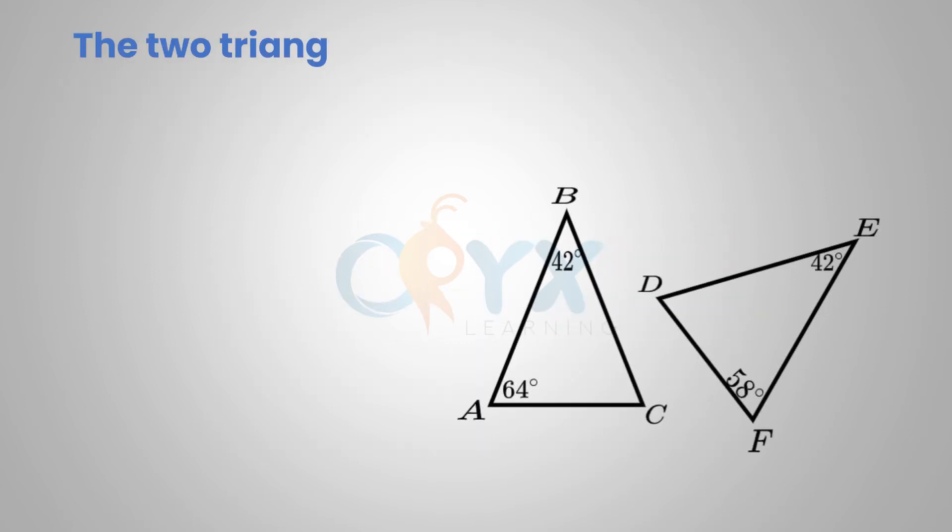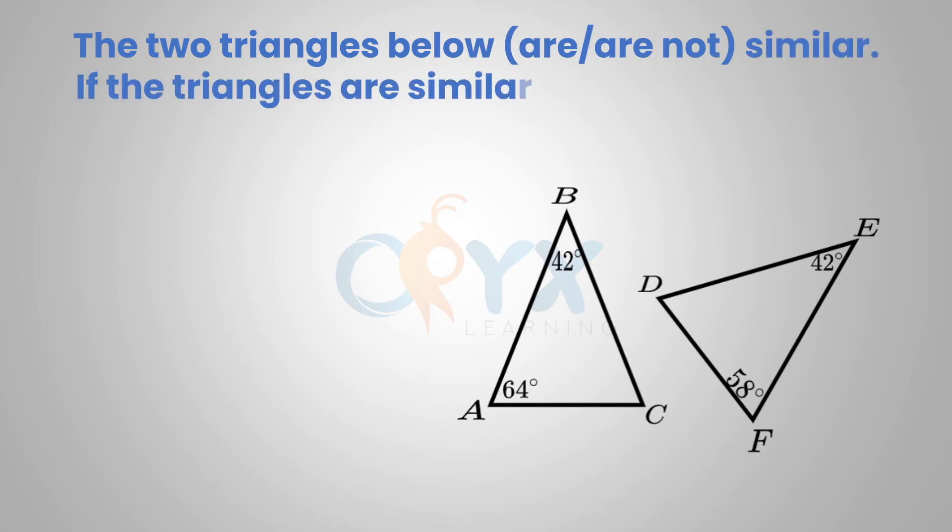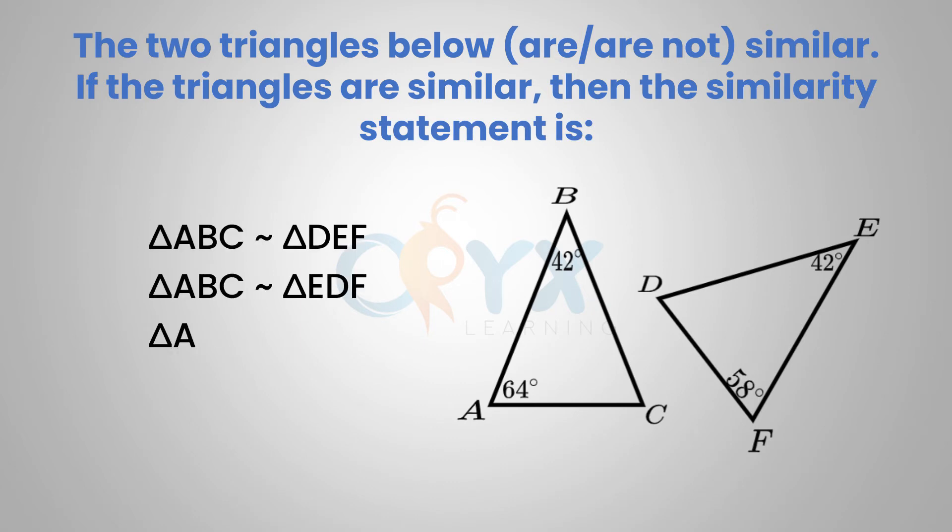The two triangles below are or are not similar. If the triangles are similar, then the similarity statement is: So looking at the two triangles, we can see that they have two angles and we can fill in the third. If there's 180 degrees in a triangle, 180 minus 64 minus 42 will give us angle C, which is 74 degrees.